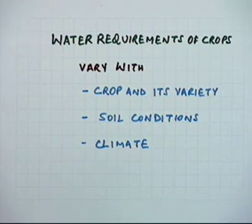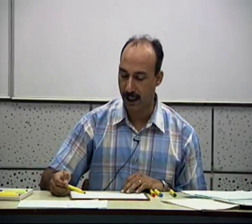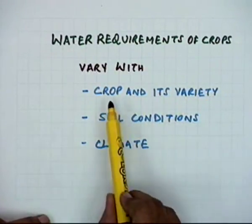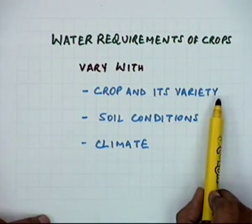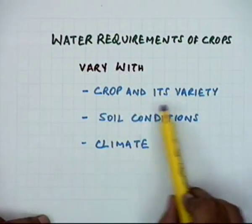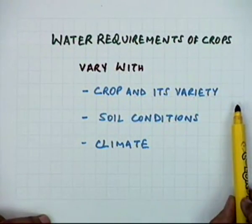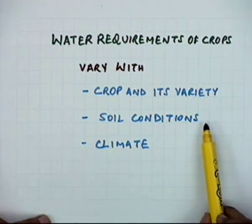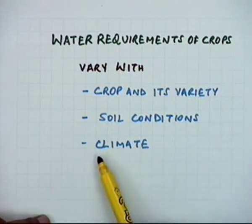How much water does a crop require? That question must be answered if we want to use water judiciously. We must know the requirement of the specific crop and whether it changes with crop variety. The three major factors which influence the water requirement of crops are: the crop and its variety, the soil conditions, and the climate.